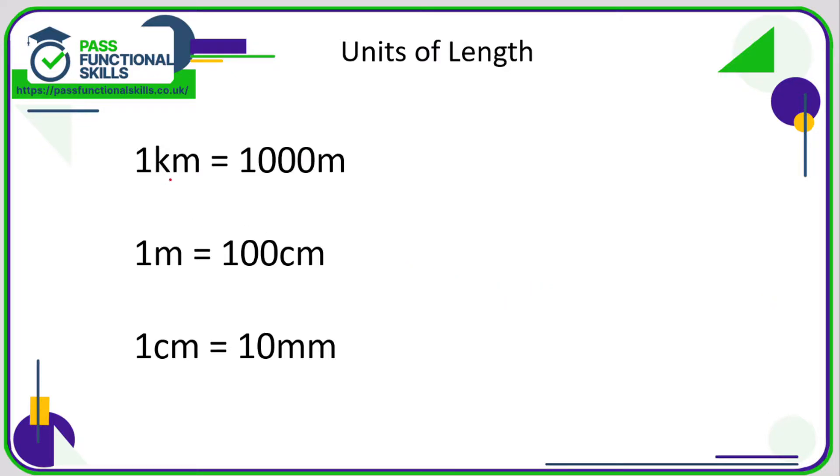Kilometres abbreviation is km, metres is m, and centimetres is cm. So when converting from kilometres into metres, we are multiplying by 1000. If you're converting from metres into kilometres, you're doing the opposite, so that is dividing by 1000.